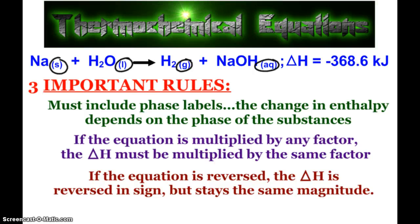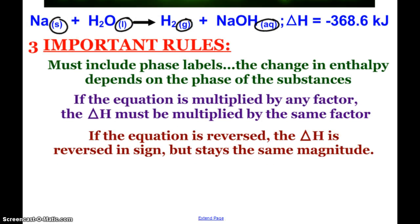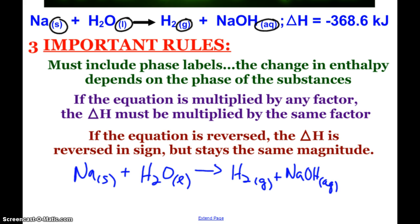Now, you can see some thermochemical equations written where the heat is just added into the equation. For example, if I have my solid sodium plus my liquid water and I make my hydrogen gas and my sodium hydroxide, since delta H is negative, it's exothermic, then I could also just say plus 368.6 kilojoules. And that way, heat is a product.